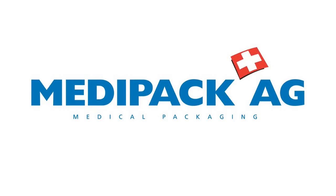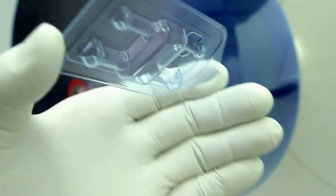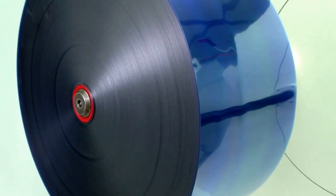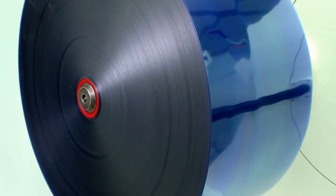Medipak Film Extrusion. The original material for blister packs is a film in roll form, which is produced in an extrusion process.